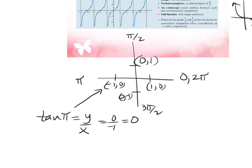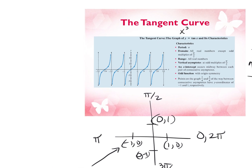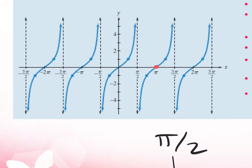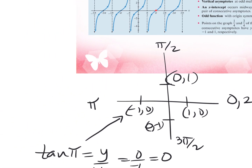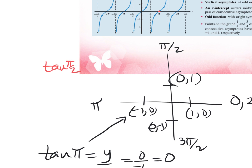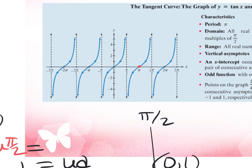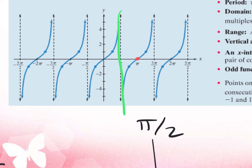Looking at the graph, we check if the ordered pair (pi, 0) was graphed — and it was. For tangent of pi over 2, the ordered pair is (0, 1), and y over x gives 1 over 0, which is undefined. So at pi over 2, it's going to be an asymptote, just like we saw yesterday. This is how you can use the unit circle to get those quadrant angles.